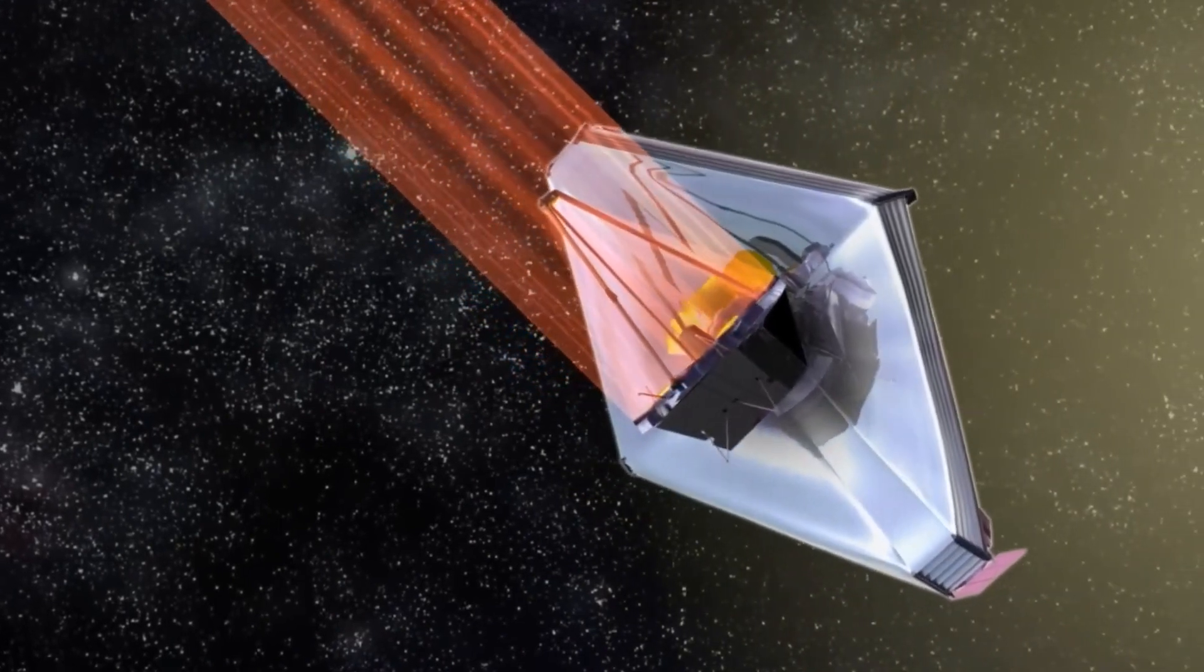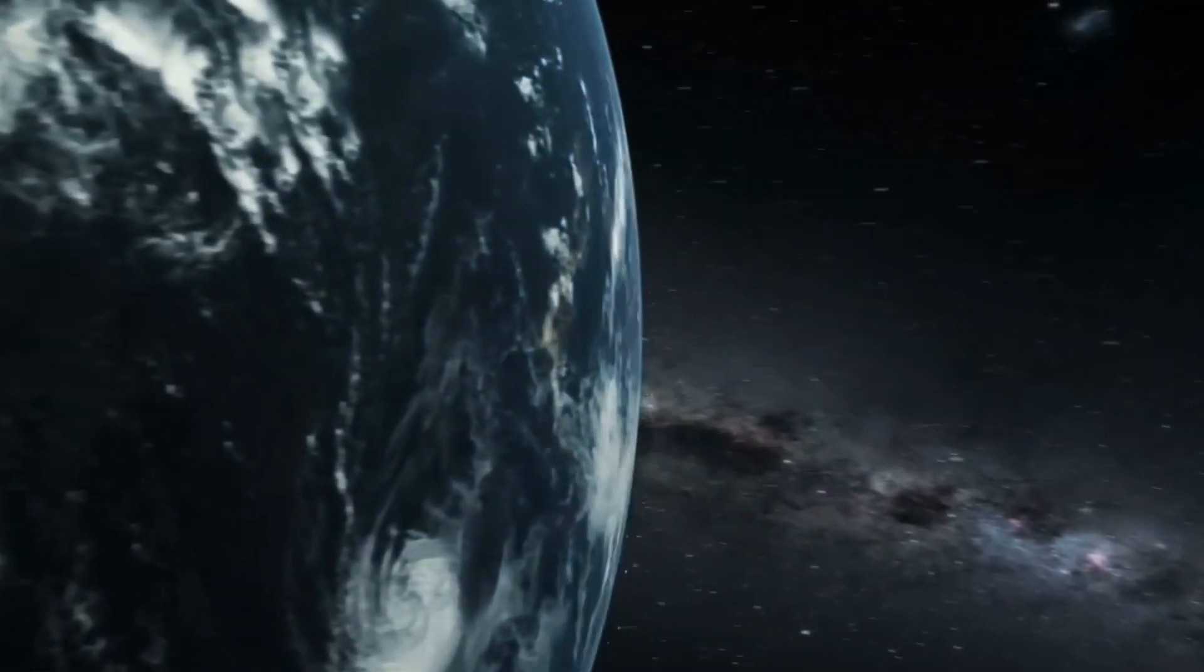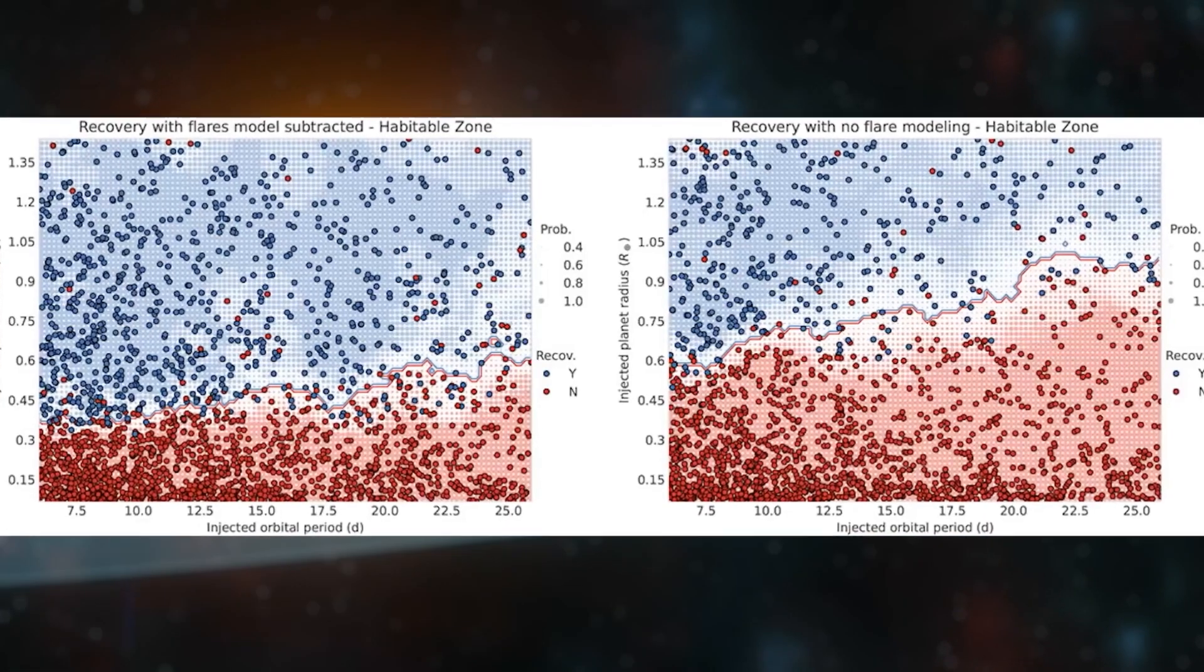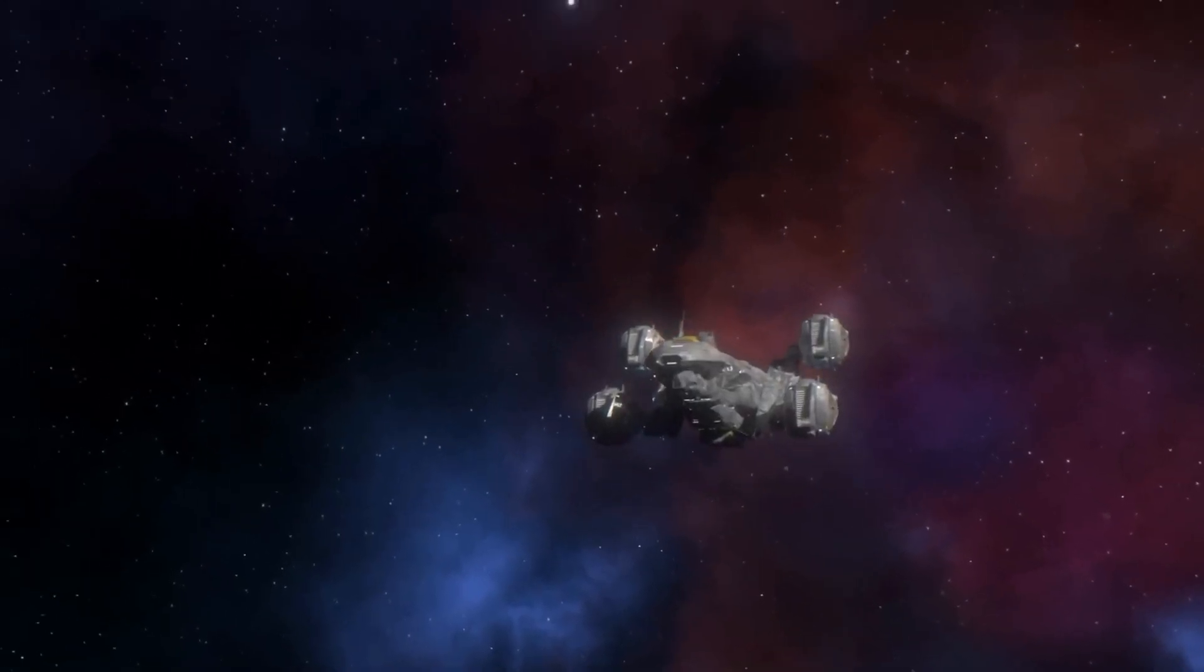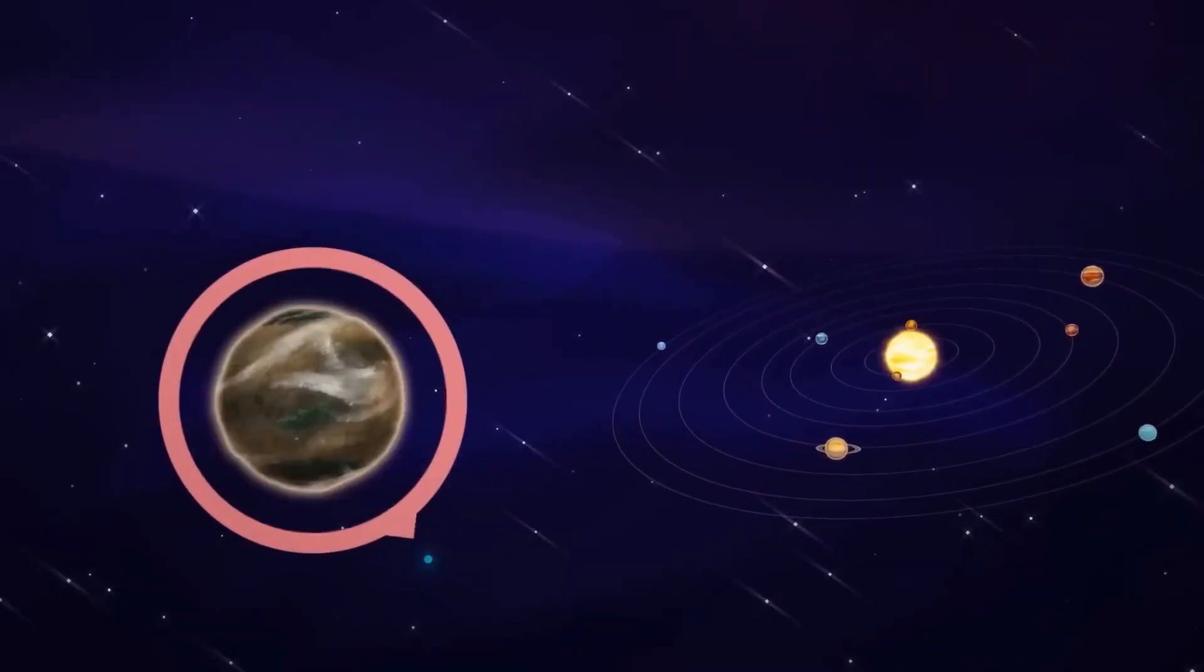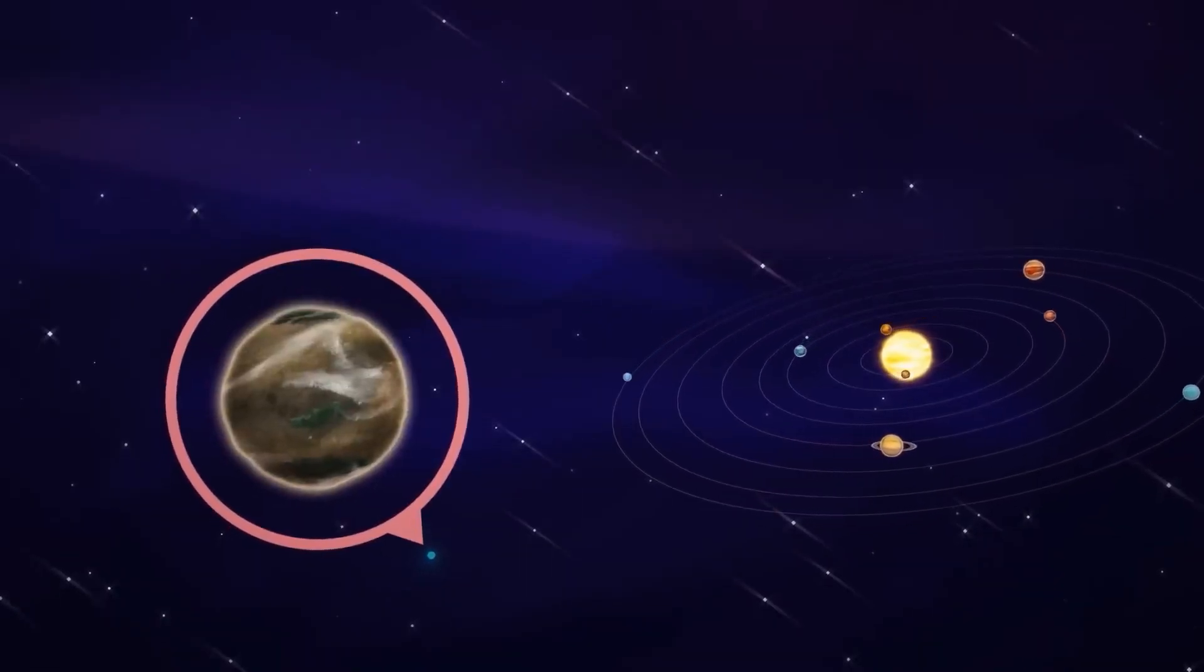The Webb Telescope is trained on Proxima b, the one confirmed planet in the Proxima Centauri system 4.25 light-years away and could presumably host a civilization, since the planet is located in the habitable zone of its star.